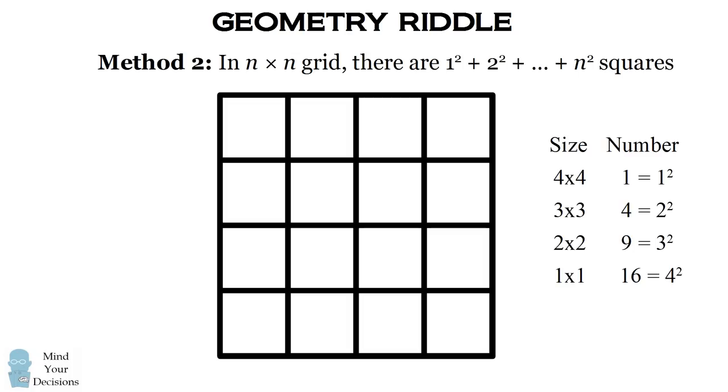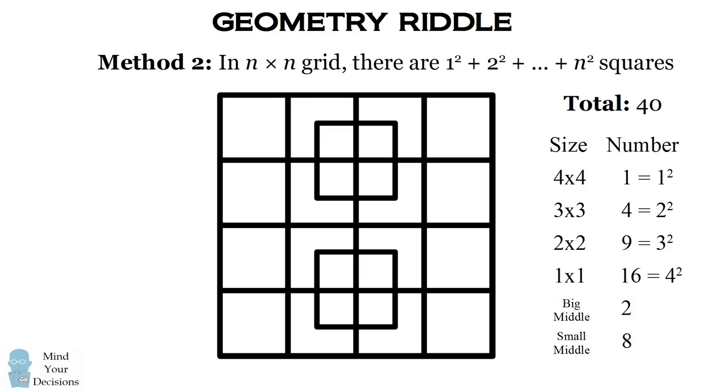We could have started out by counting this without even doing the count of the squares, just using this formula. And then we would have had to add on the number of squares created by the squares in the middle, which would have been 10, and that would have again got us to the answer 40.